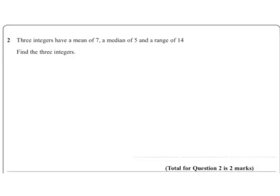Well, we're looking at an averages problem here. It says we've got 3 integers - integers means whole numbers - that have a mean of 7, a median of 5 and a range of 14. So the first thing I would do would be,